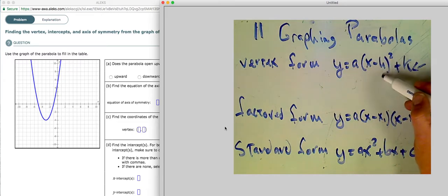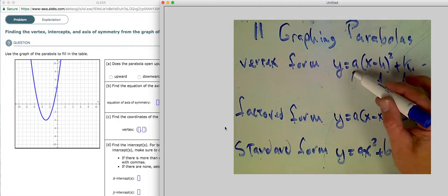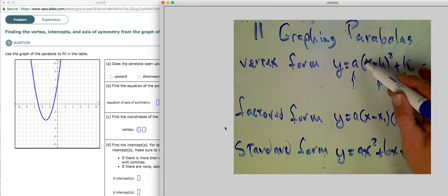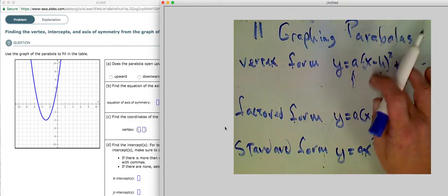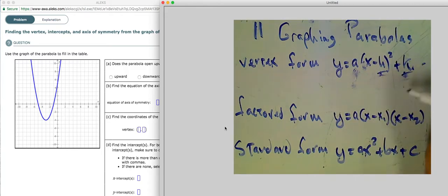We shifted it either horizontally by adding or subtracting inside, or we shifted it vertically out here, or we stretched it vertically in here, or horizontally in here. But vertex form just uses the coordinates of the vertex and then a vertical stretch, usually.